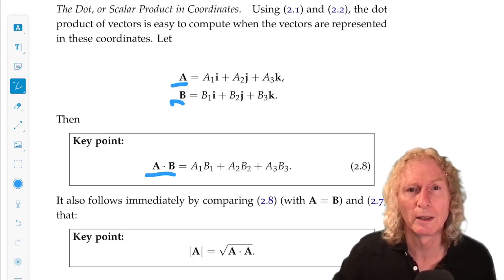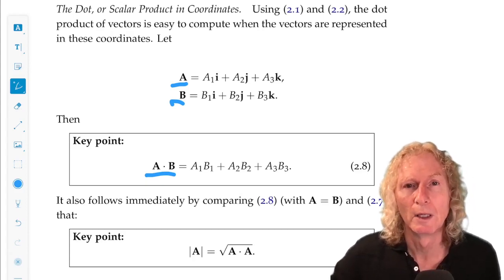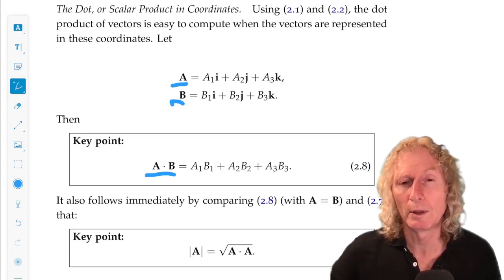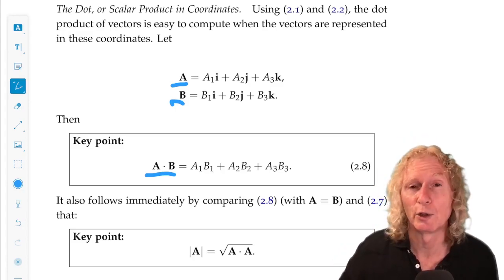So the components in i, A1, B1, components in j, A2, B2, and components in k, A3, B3. Add it up. How do you prove this?